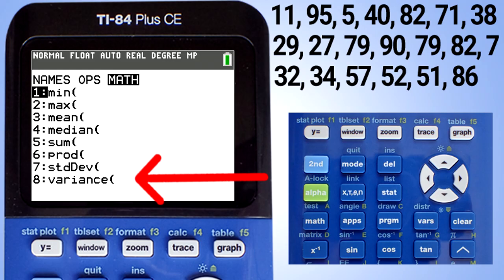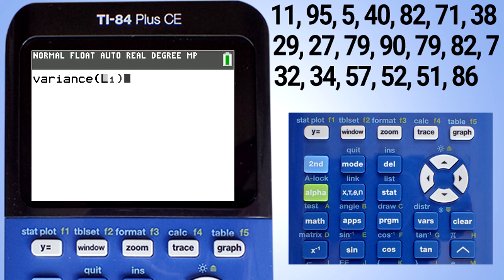Above the variance is standard deviation. So this is another way to find the standard deviation. Highlight variance. Press the enter button. This window appears. Enter L1, close the parenthesis, press the enter button, and there is the variance.